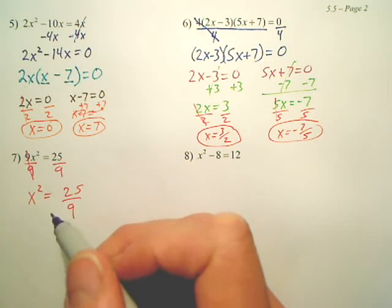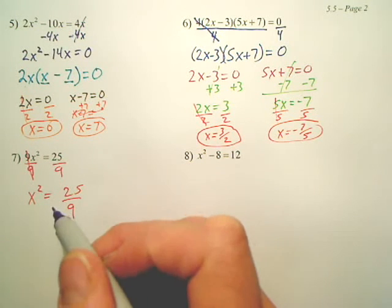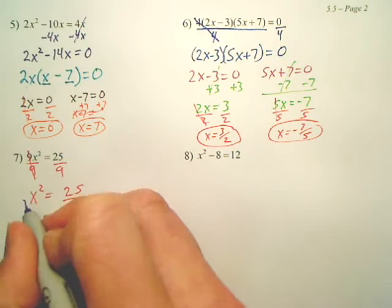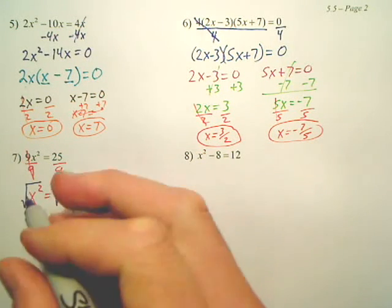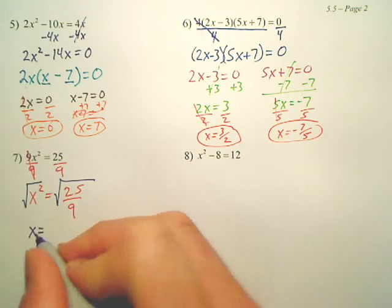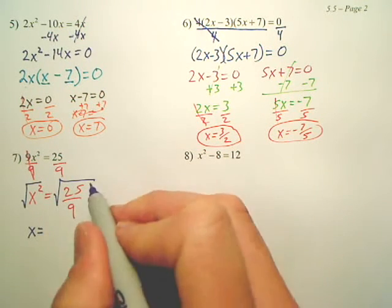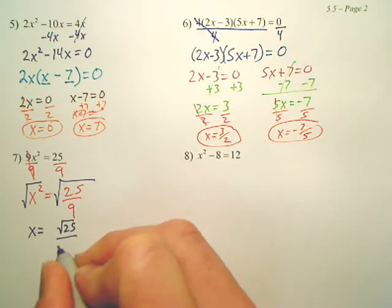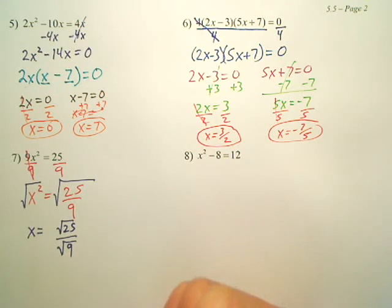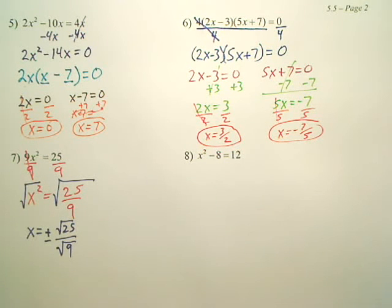Just like I undo divide by multiply, I undo add by subtracting, I'm going to undo a square by square rooting. And when I square root both sides, you got x equals, now this big square root actually becomes the square root of 25 over the square root of 9. Now, I'm going to tell you something. Right now, there's actually a plus or minus here. And I'll explain that in a second why. Just trust me for now.